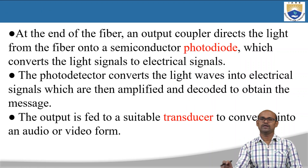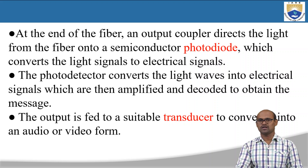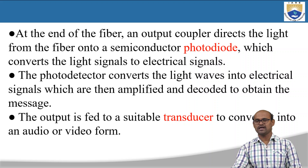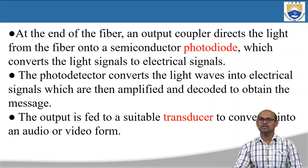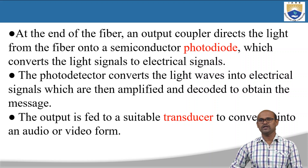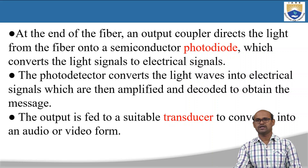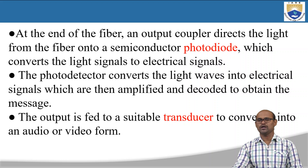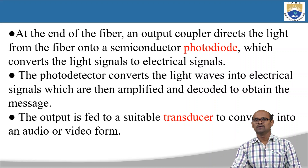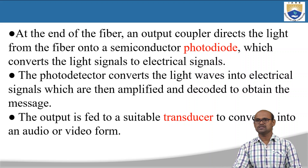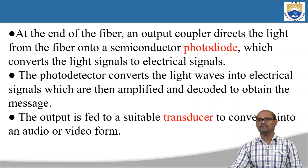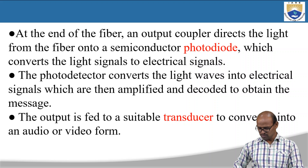To summarize the block diagram: the transmitter has a transducer, drive circuit, and a light source. First, the audio signal is converted into an electrical signal using a transducer. This electrical signal is converted into a light signal using an LED. The light signal is then given as input to the optical fiber. In the optical fiber, repeaters are used to avoid attenuation and distortion and regenerate the signal. The receiver has a photodiode, which converts the light signal into electrical signal, followed by an amplifier, a decoder, and finally a transducer that converts the electrical signal into audio or video signal.